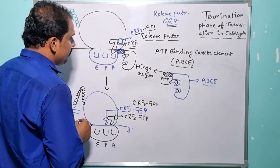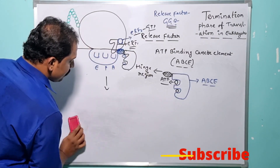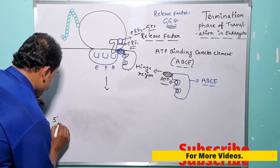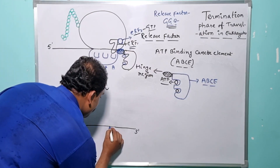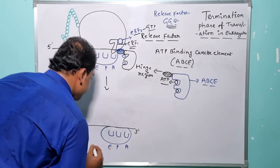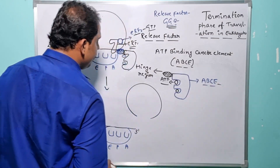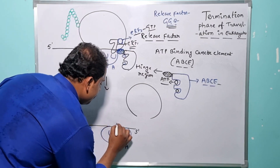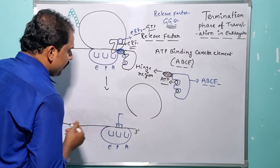After the successful dissociation of the large subunit of the eukaryotic ribosome from the small subunit, one more factor comes into the picture: eukaryotic initiation factor 2D (eIF2D). The specific eIF2D is responsible for providing destabilization — that is, in the presence of eIF2D, the strong interaction between the codon of the mRNA and the anticodon of the tRNA gets successfully disrupted.